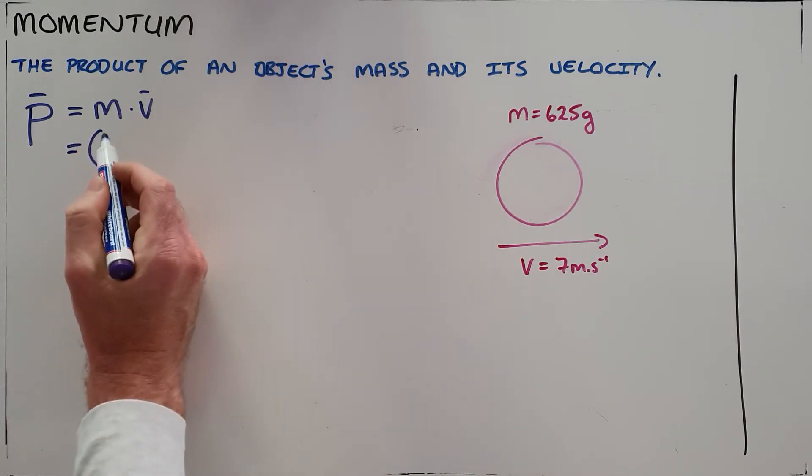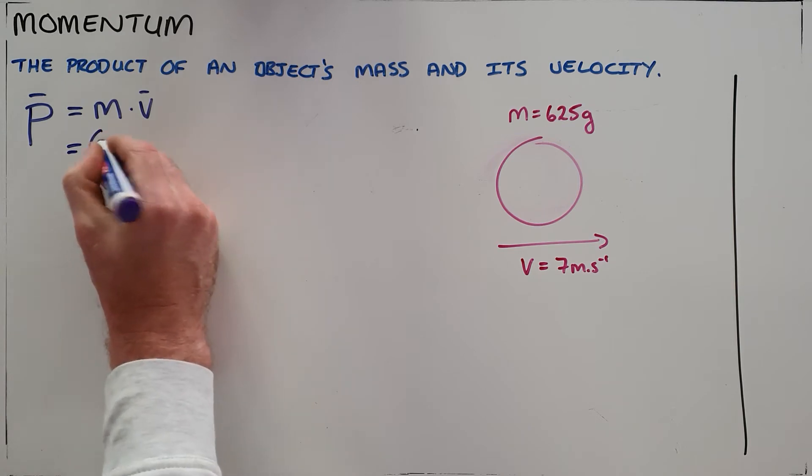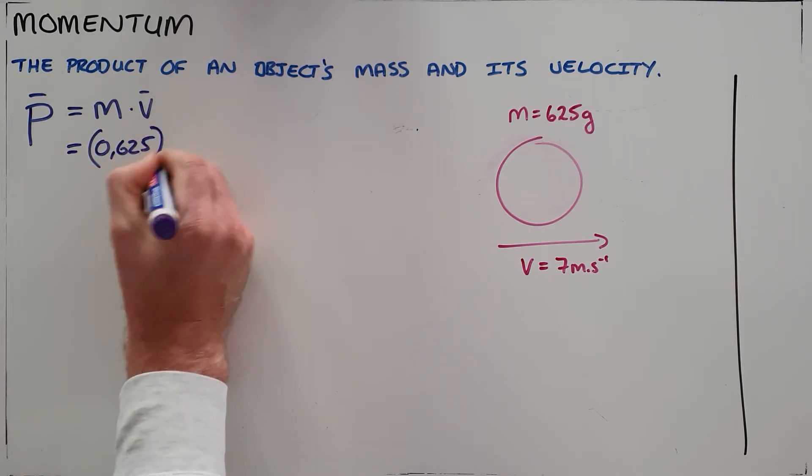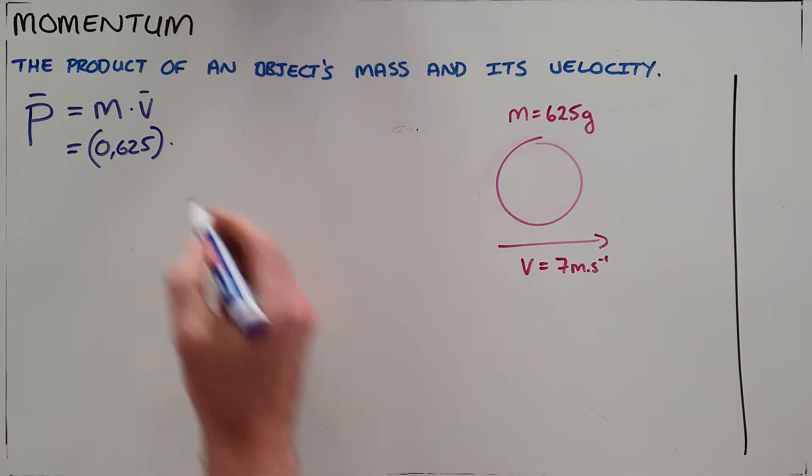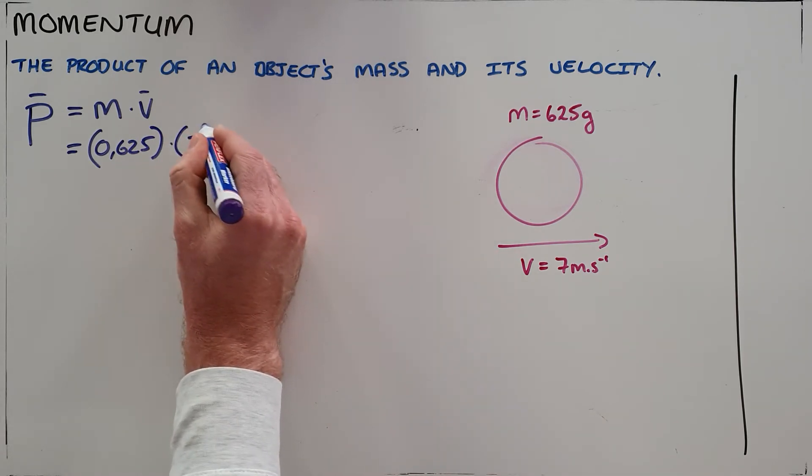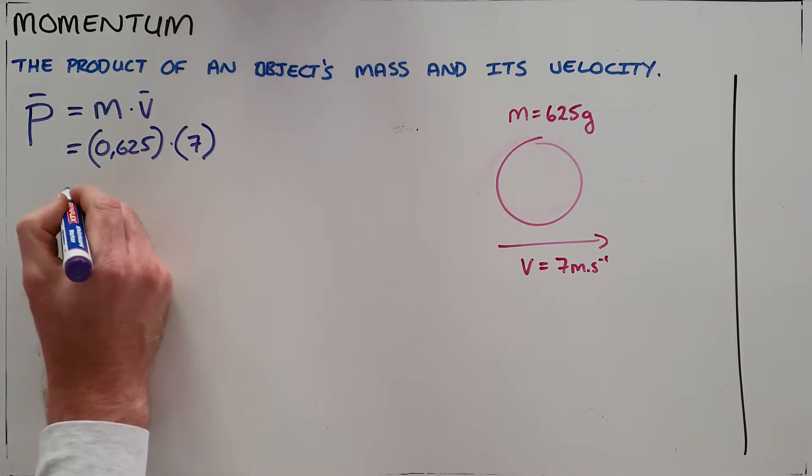We know that mass should always be measured in kilograms. So that is 0.625 kilograms multiplied by the velocity of this object, which in this case is 7 meters per second as it was given.